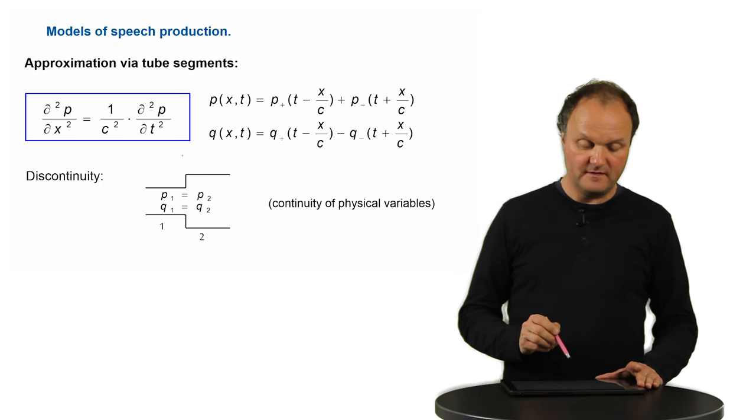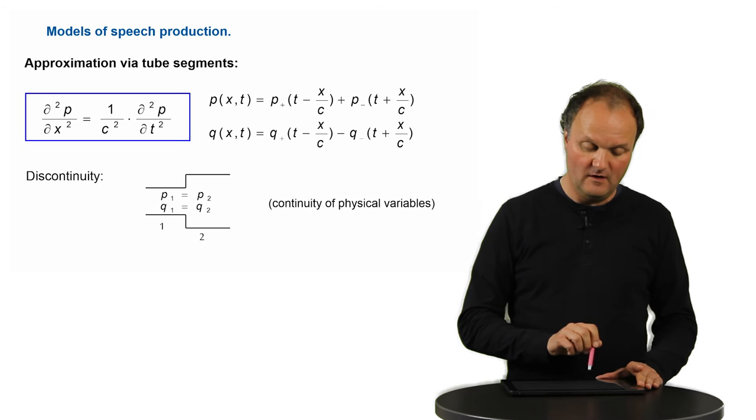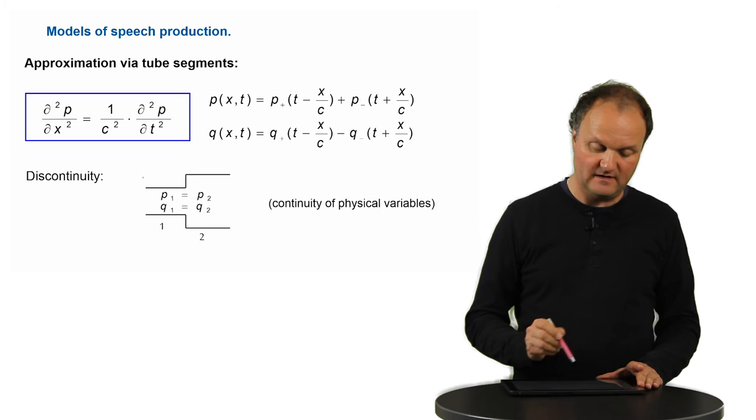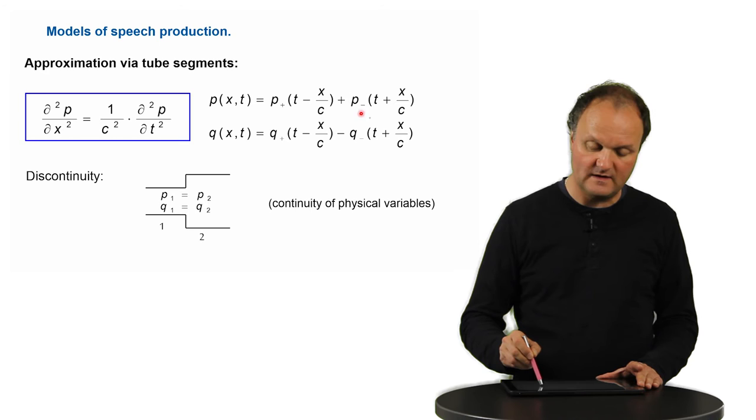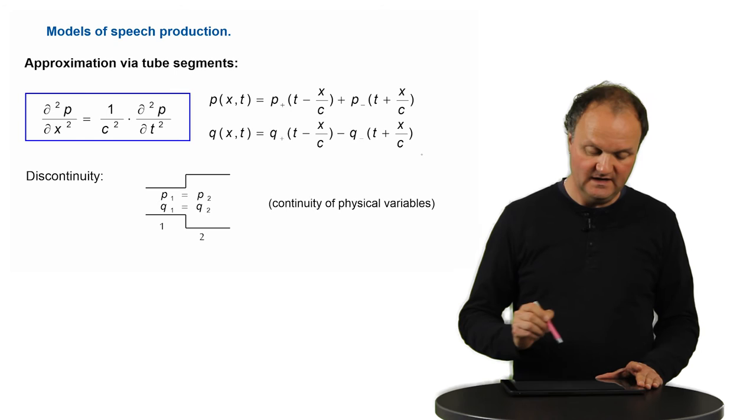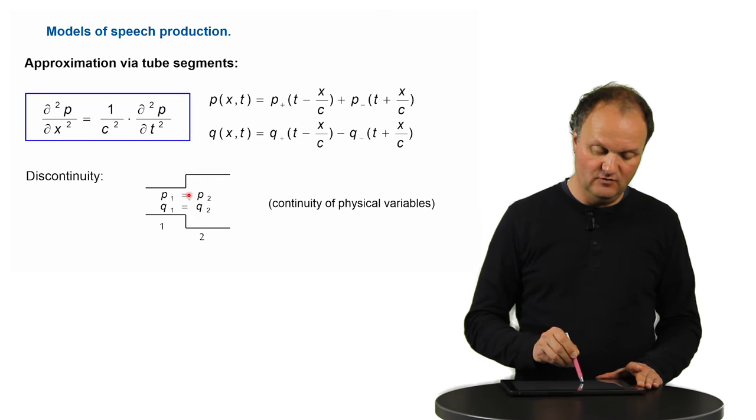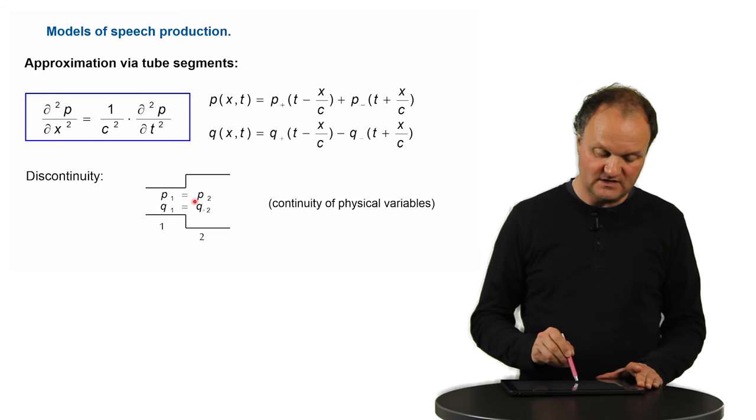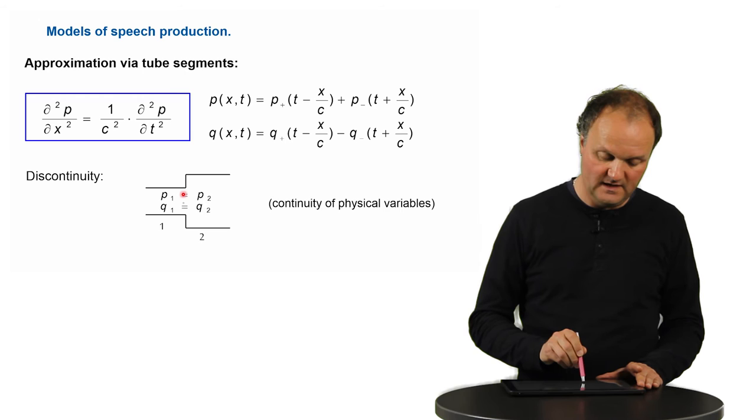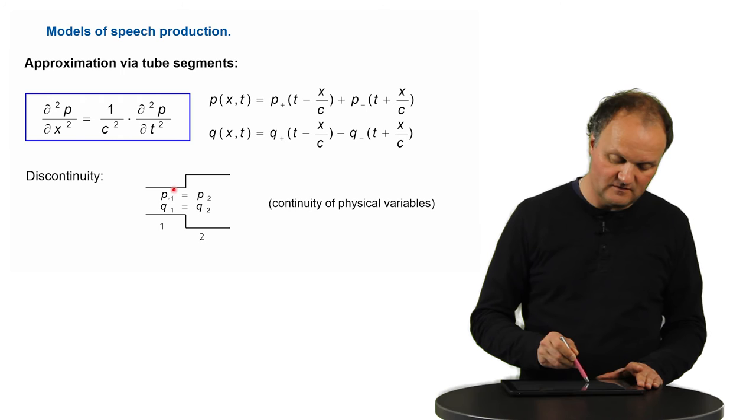In order to resolve this equation, we can assume that the sound pressure wave consists of two parts, one running into the positive direction and one running into the negative direction. This part runs into the positive x direction, this part runs into the negative x direction, and the overall sound pressure is the sum of both parts. Same can be applied for the velocity equation here. What is important is that at the intersection of two tube elements with different diameters, the sound pressure needs to be the same, and also the velocity needs to be the same. That is, the sound pressure coming from here needs to go further on there, and the part of the sound wave which goes into this direction needs to continue in that tube section.